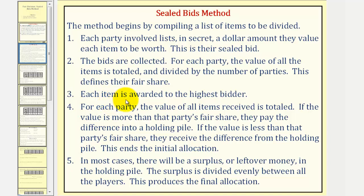Step three: each item is awarded to the highest bidder. Step four: for each party the value of all items received is totaled. If the value is more than that party's fair share, they pay the difference into a holding pile.